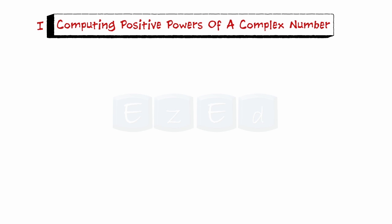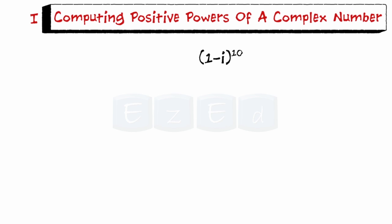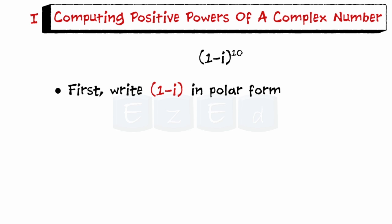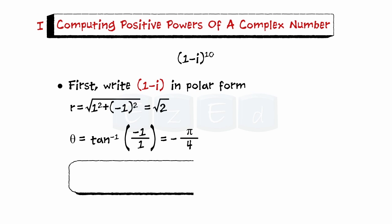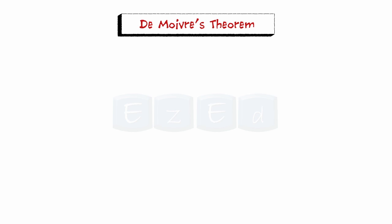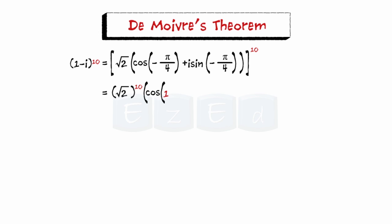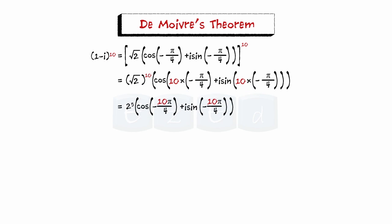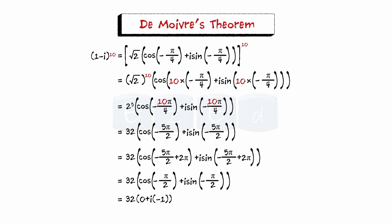Let us see how we can use it for computing positive powers of a complex number. First, let us write 1 minus i in polar form. We get r equal to square root 2 and theta equal to minus pi by 4. So the polar form is square root 2 times cosine of minus pi by 4 plus i sine of minus pi by 4. Applying De Moivre's theorem gives square root 2 to the power 10 times cosine of 10 times minus pi by 4 plus i sine of 10 times minus pi by 4. Simplifying, we get the final answer to be minus 32i.